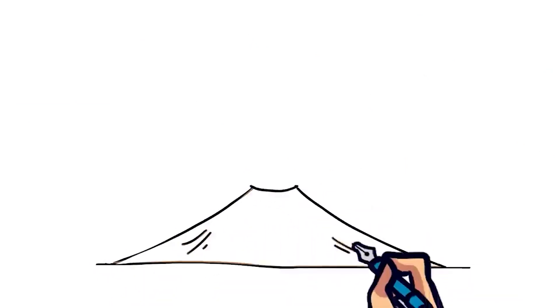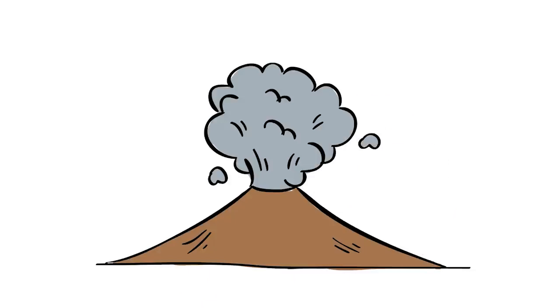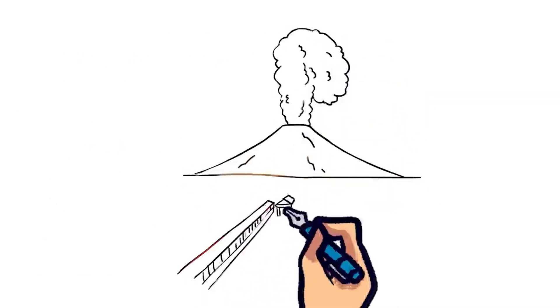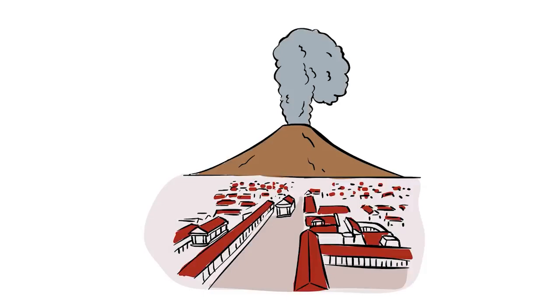Probably the most dangerous eruption is the Plinian eruption, which is the largest and most violent. This eruption releases an incredible amount of energy and can cause an eruption of gas and ash that can reach up to 50 kilometers or 35 miles high. The most well-known Plinian eruption is that of Mount Vesuvius in 79 AD.